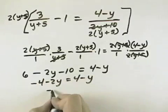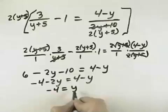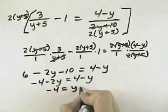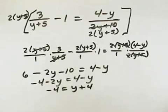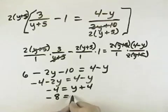If I add 2y to both sides, I get negative 4 equals y, plus the 4 that was already there. So adding 2y to both sides. And so then subtracting the 4, I get negative 8 equals y.